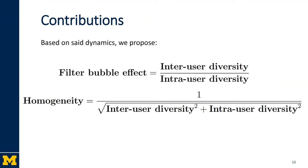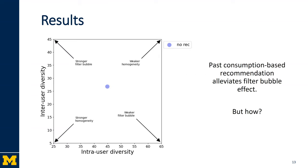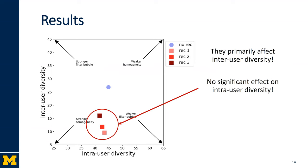Based on these dynamics, we propose two novel definitions for filter bubble effect and homogeneity. Finally, we take a look at how past consumption-based recommendation algorithms affect user consumption. We know from previous research that these algorithms alleviate the filter bubble effect. It turns out that they primarily affect inter-user diversity and do not have a significant impact on intra-user diversity.